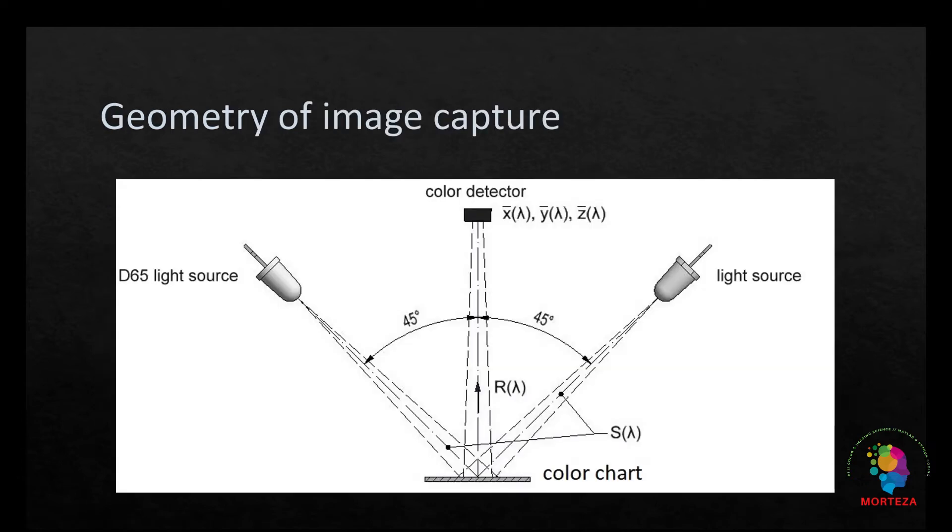It will be important to capture the image in a controlled environment in terms of lighting, in a way that the light source would make a 45 degree angle with the chart, and the camera would be at the angle of 0 as shown here. It will be better if you have two light sources so that the lighting would be as uniform as possible.